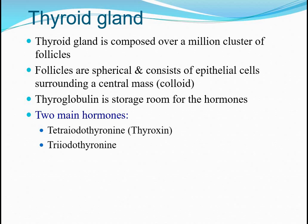The follicles are spherical, consisting of epithelial cells surrounding a central mass that is colloidal in nature, where the hormones are attached with thyroglobulin located inside. The thyroid mainly secretes tetraiodothyronine, simply called thyroxine or T4, and triiodothyronine, called T3.